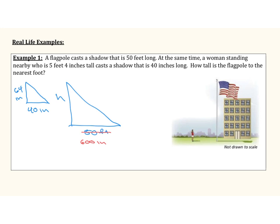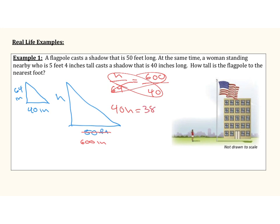The height of the flagpole over the height of the woman should equal the flagpole's shadow over the woman's shadow. Cross-multiplying gives us 40H equals 38,400. Dividing both sides by 40, the height equals 960 inches. Since the question asks for the nearest foot, we divide 960 by 12 and get that the height is approximately 80 feet.